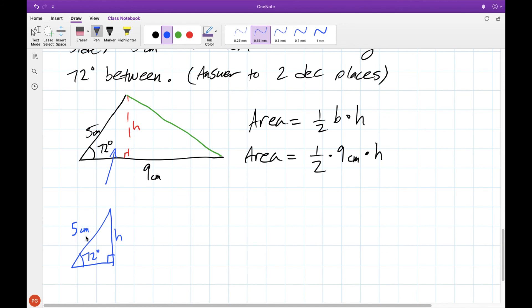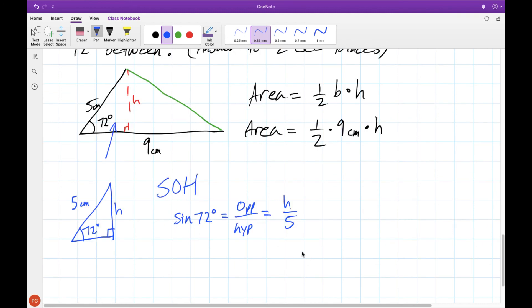In this case we know the hypotenuse and the opposite side, so the ratio we're going to have to use is sine. Sine is opposite over hypotenuse, which is h over 5 in this case. If we multiply both sides by 5 we can solve for the height, which if we plug into our calculator we get an answer of this many centimeters.